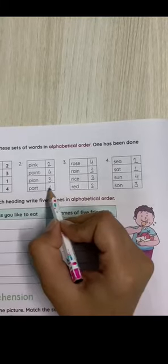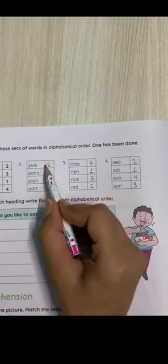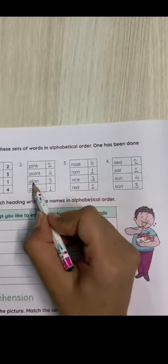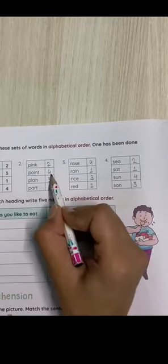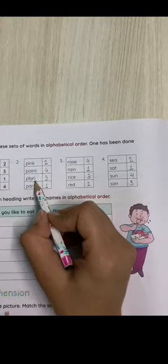Pink, point, plan. Then A, number one. Then I, number two. Then L, number three. Then O, number four. The first spelling is part, then pink, then plant, then point.